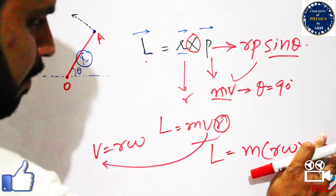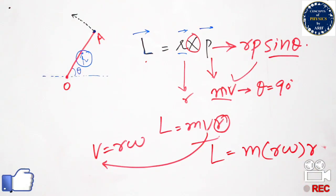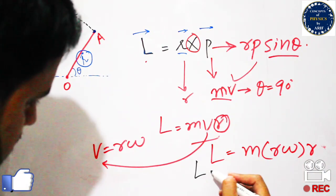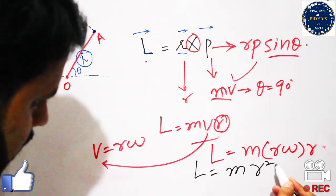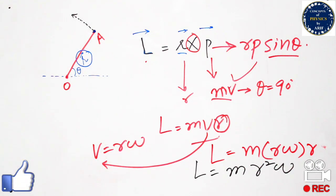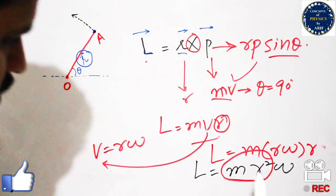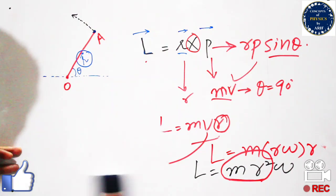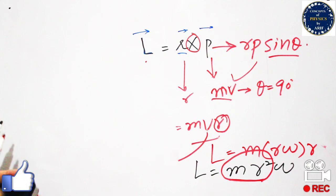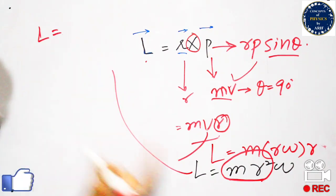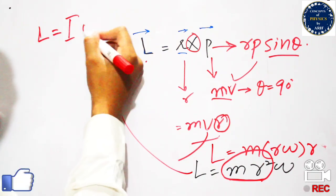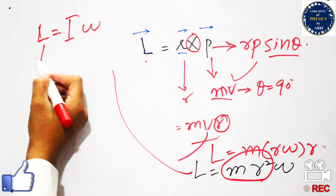Simplifying this expression: L equals m r squared times omega. Here, m r squared is the moment of inertia, denoted as I, because the body is moving in angular motion. Therefore, the final expression becomes L equals I times omega.